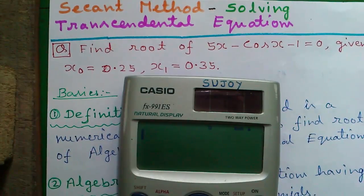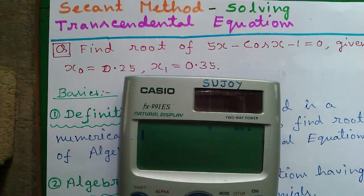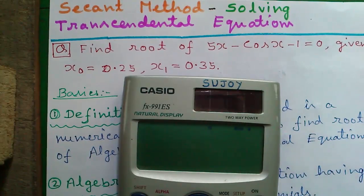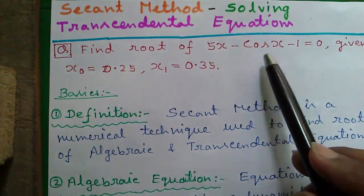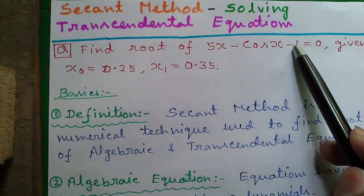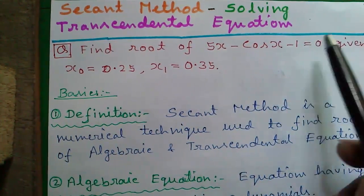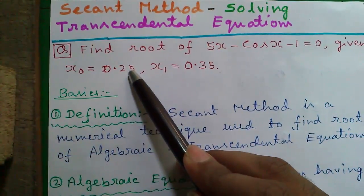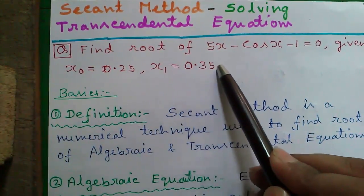And number two, how to find out the root of a transcendental equation by secant method. And number three, how to find out the root without doing the calculation directly on this calculator. Isn't it cool? So let's start. Our question is find the root of 5x minus cos x minus 1 equals to 0, given x0 equals to 0.25 and x1 equals to 0.35.